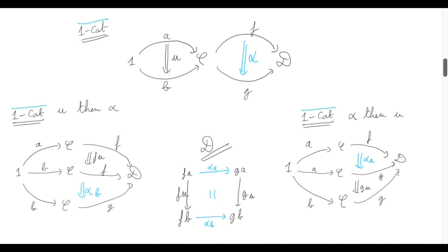We get back the original definition of a natural transformation: there is a family of morphisms in D indexed by objects of C — one for each object of C — such that for any morphism U in C, the corresponding square commutes. This is one way to recover the traditional definition of natural transformation. It arises solely from the fact that we want to have those two-cells, and we know that functors from 1 to C form a category equivalent to C — not just as a set, but with objects and morphisms, the morphisms being natural transformations.